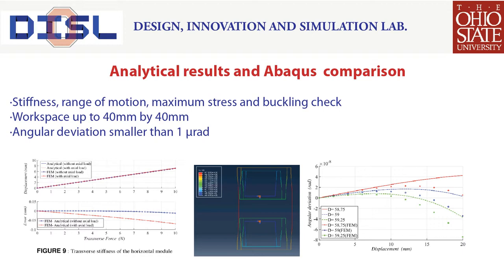The beam constraint model proposed by Awtar is used to estimate these physical characteristics. Simultaneously, the Abaqus FEM software is also used to verify these results.